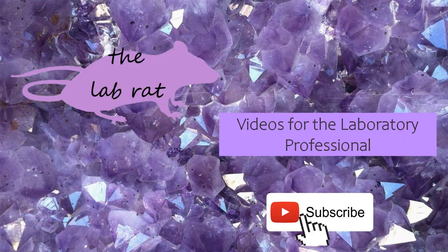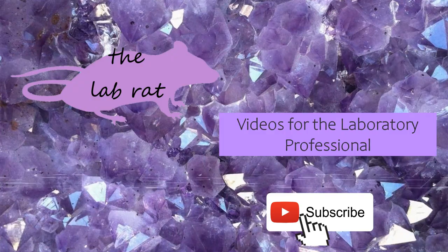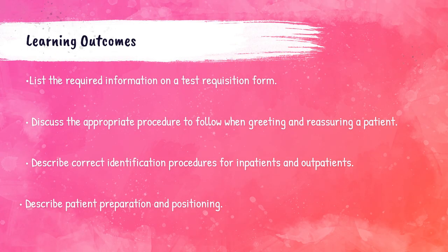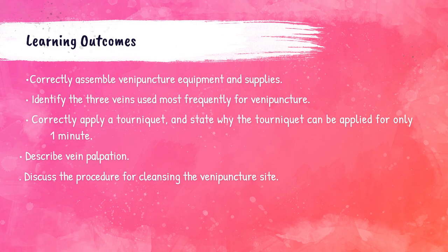After watching this lecture recording you will be able to: list the required information on a test requisition form; discuss appropriate procedures for greeting and reassuring a patient; describe correct identification procedures for inpatients and outpatients; describe patient preparation and positioning for venipuncture; correctly assemble necessary venipuncture equipment and supplies; and identify the three veins most commonly used for venipuncture. You'll also learn how to correctly apply a tourniquet and understand why it can only be applied for one minute, as well as describe vein palpation and discuss the procedure for cleansing the venipuncture site.